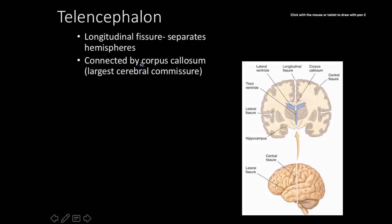The longitudinal fissure separates the two hemispheres and they are connected by the corpus callosum. In split-brain research, patients with severe seizures had their corpus callosum surgically cut. This revealed significant cognitive differences between the right and left sides of the brain — for example, when asked what they wanted to be when they grew up, they might say 'fireman' verbally but write 'police officer,' opening up a whole can of worms.